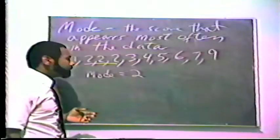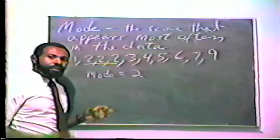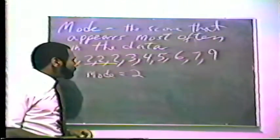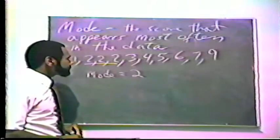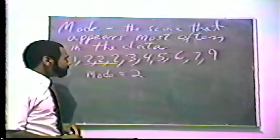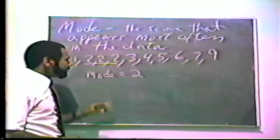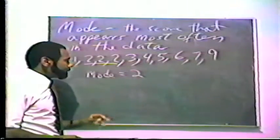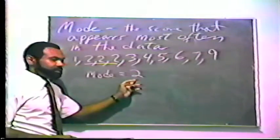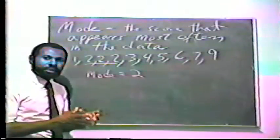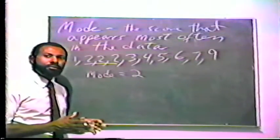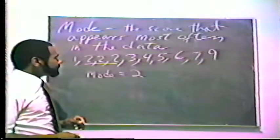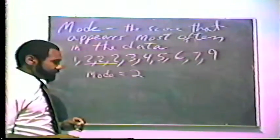We're finding out where most of the scores are when we find the mode. And this is the number that we're using to describe the data set. We can say that the average score is 2, and we can be talking about the mode when we say the average score. So, the mode is a measure of central tendency.